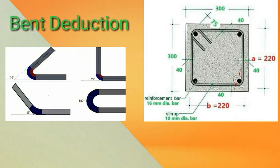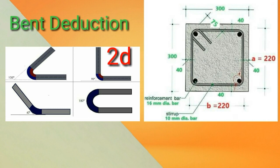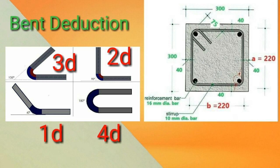Now let's discuss bend deduction. When we bend a steel bar, it will stretch to a certain degree. This additional length due to bending should be deducted in the calculation of cutting length of ties. For a 90 degree bend, it has a bend deduction of 2d, or 2 times the bar diameter. For a 135 degree bend, the bend deduction is 3d, or 3 times the bar diameter.